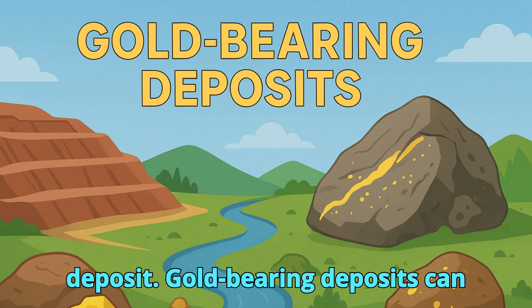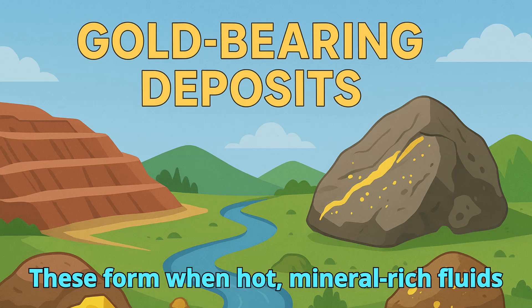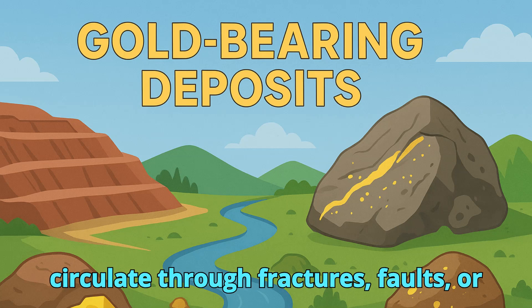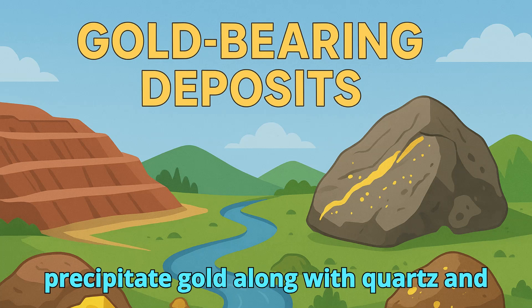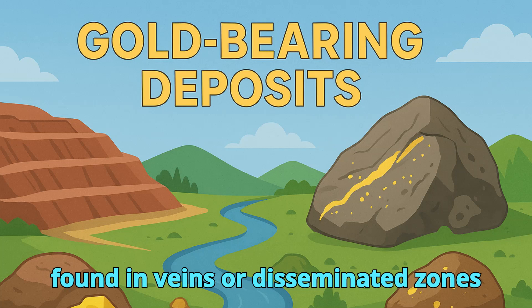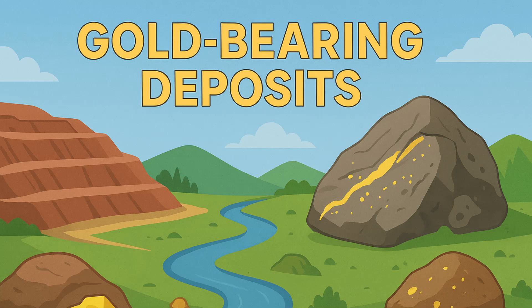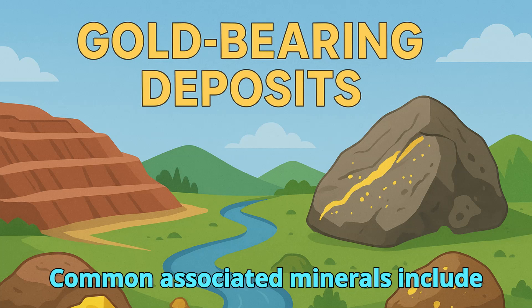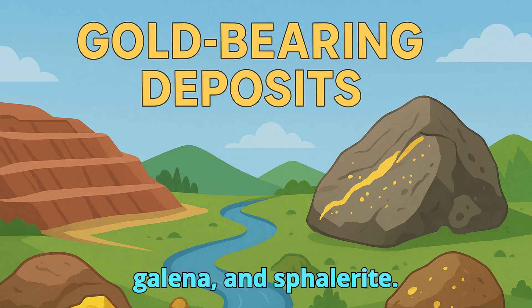Gold-bearing deposits can occur in different geological settings. Primary, or lode, deposits form when hot, mineral-rich fluids circulate through fractures, faults, or shear zones in the earth's crust and precipitate gold along with quartz and sulfide minerals. They are often found in veins or disseminated zones within igneous or metamorphic rocks. Common associated minerals include quartz, pyrite, chalcopyrite, galena, and sphalerite.